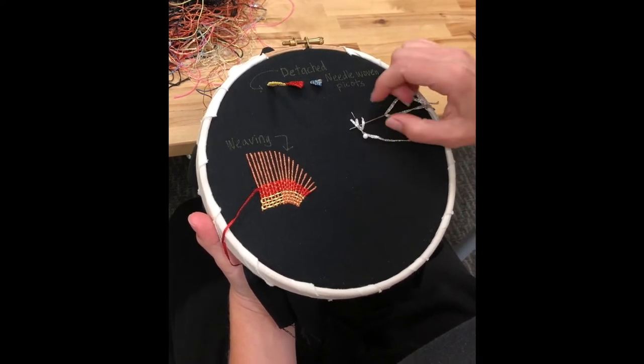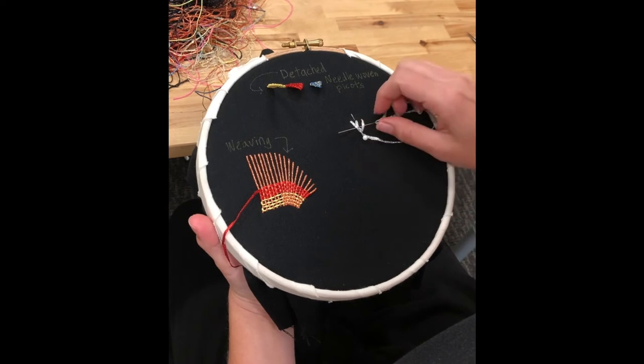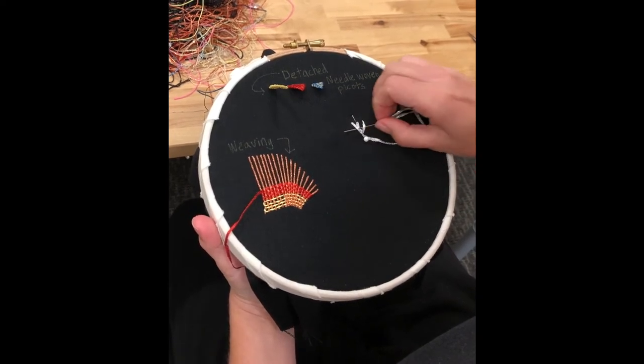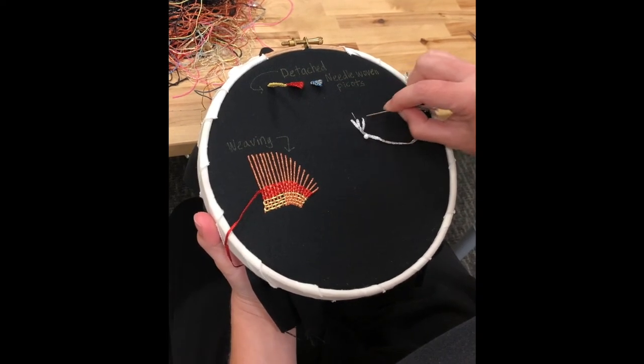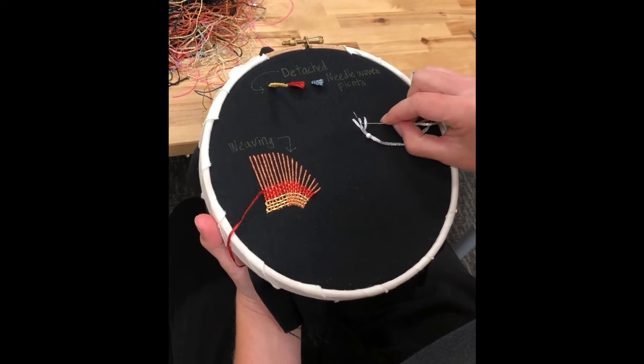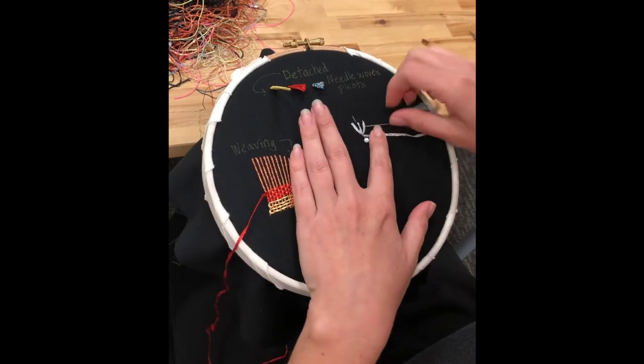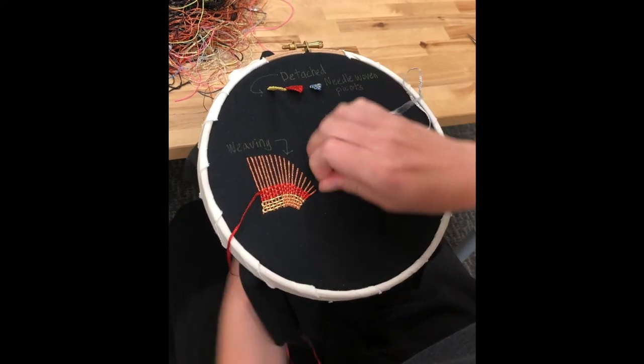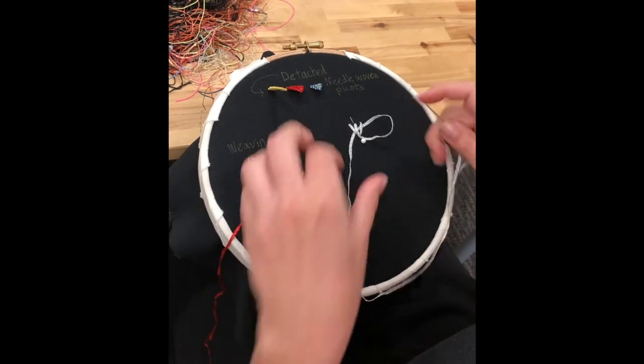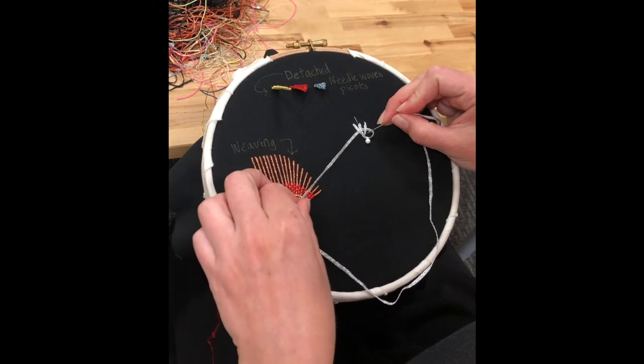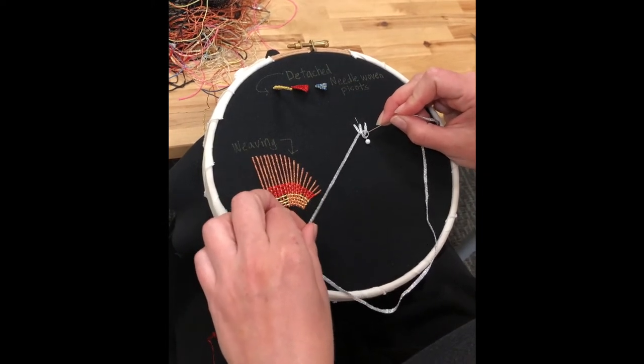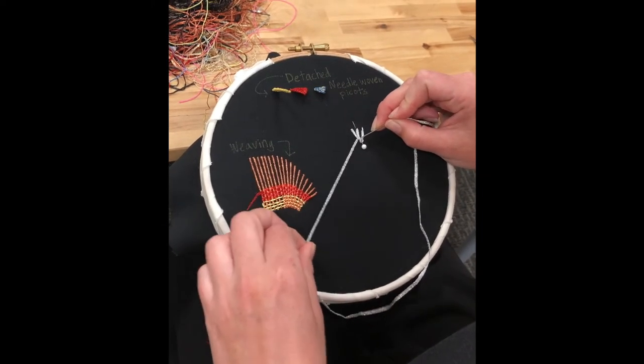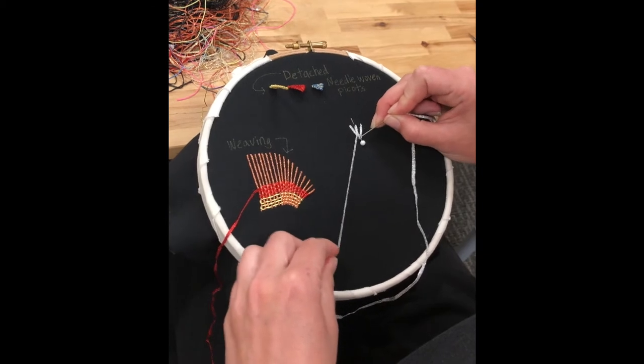So under, over, under. And by using the point of the needle, which is dull, we're not going to accidentally catch the fabric or catch any of these threads. It's just going to slide through nice and easy. So under, over, under. And then I'm going to use my needle here as just a little bit of a tool to keep this nice and neat. And then I'm going to pull that down nice and tight.